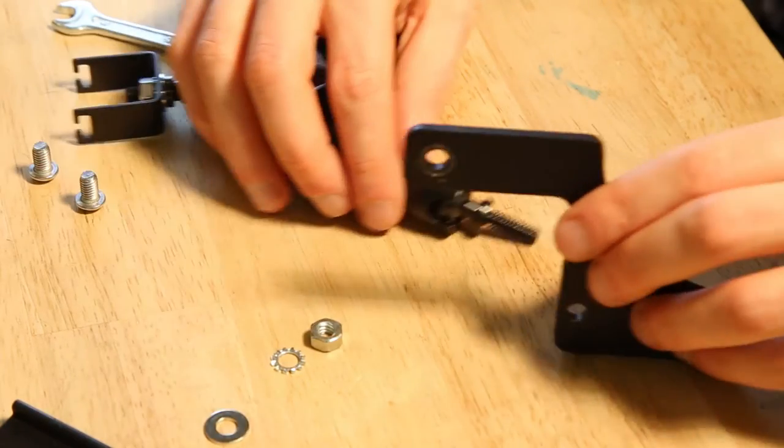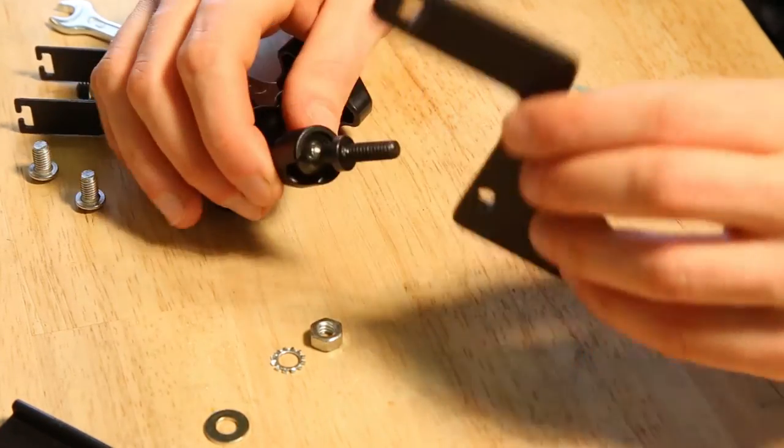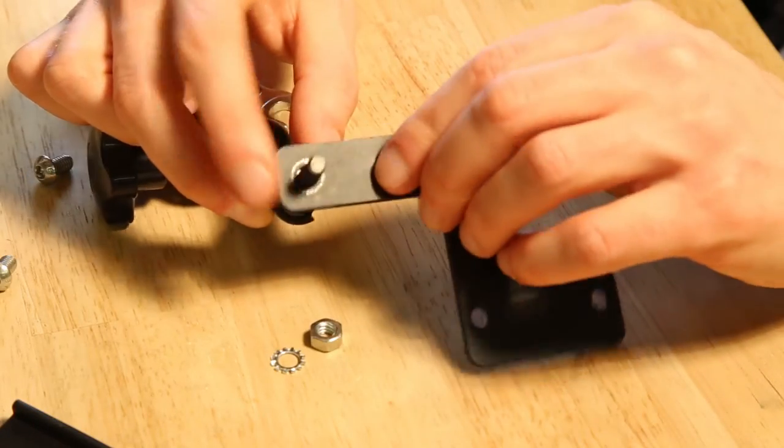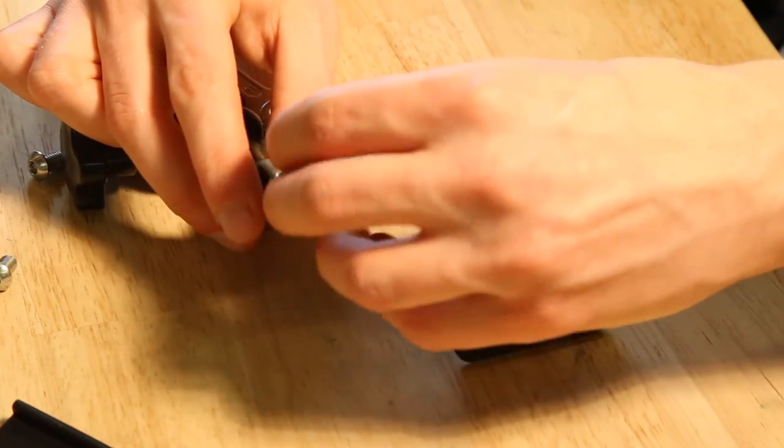Now we'll attach the connecting plate to the articulating arm. The same procedure: a flat washer first, then the plate, then the tooth lock washer, and finally the hex nut.